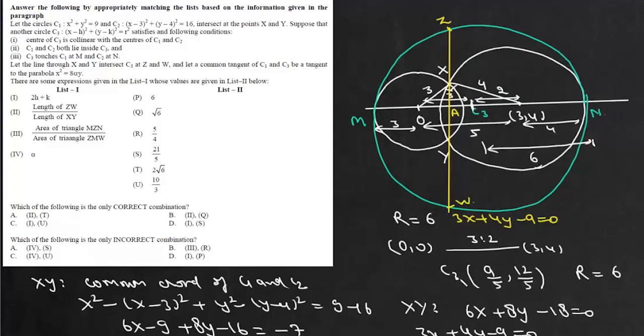Now for this circle C3 we can find this AC3 which is perpendicular distance of this line from center of the circle. So this AC3 will be 3 times 9 by 5 plus 4 times 12 by 5 minus 9 upon under root of a squared plus b squared which is 5. Now this is 27 plus 48 minus 45 so there will be 30 by 25 which is simply 6 by 5 so length of AC is 6 by 5.